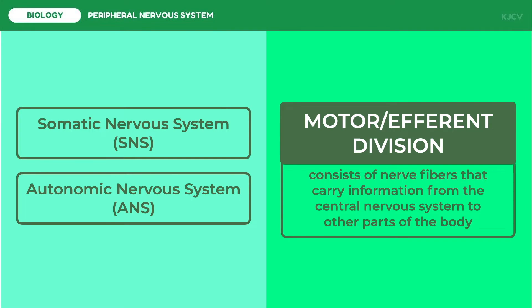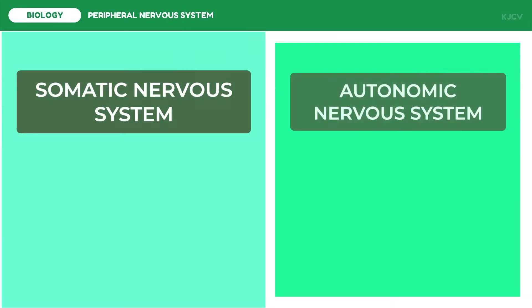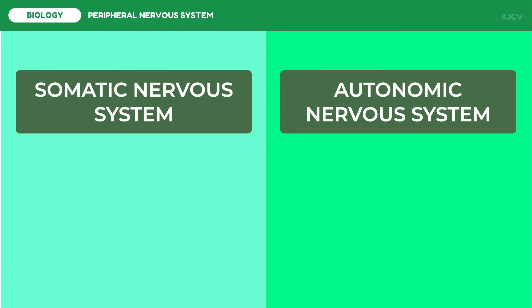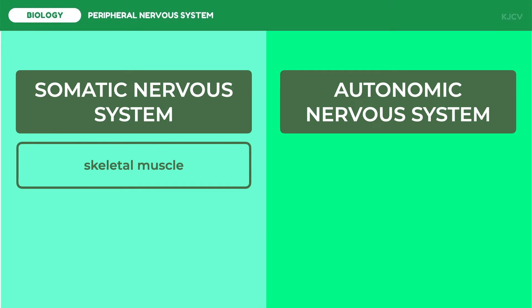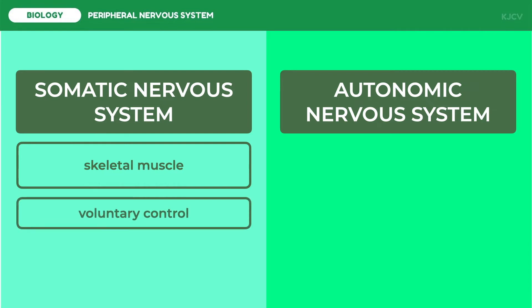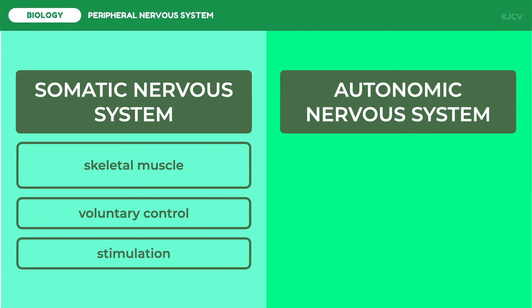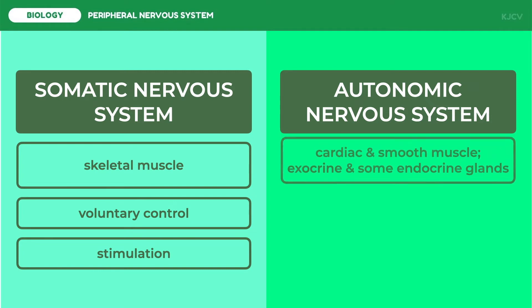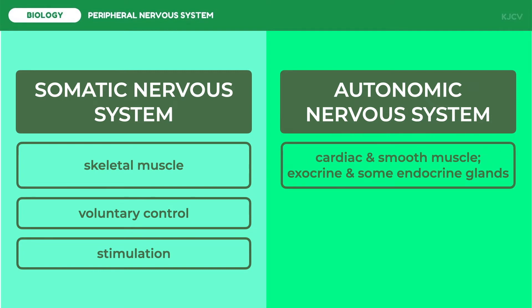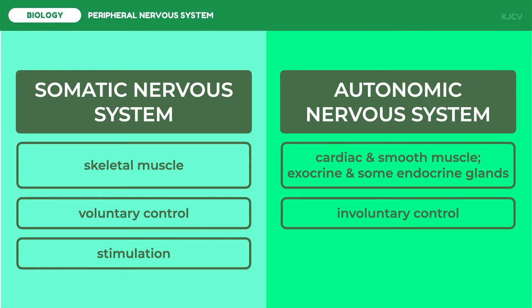The efferent system is made up of the cranial and spinal nerves that go from the central nervous system to your skeletal muscles. Thus, the somatic system controls voluntary actions; voluntary organs such as skeletal muscle are always stimulated. The autonomic system controls those not under conscious control, such as your heart rate, breathing, digestion, and glandular functions. Thus, the autonomic nervous system controls involuntary actions, and since these organs are controlled involuntarily, they function through both stimulation and inhibition.